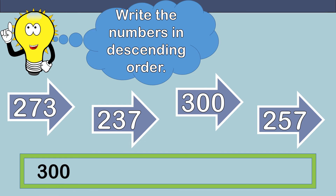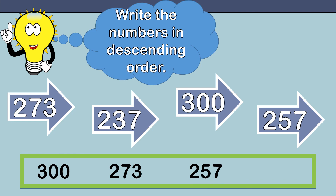That's correct, we should write the number 300 first. Next, 273, then 257, and our last number should be 237. Great job.